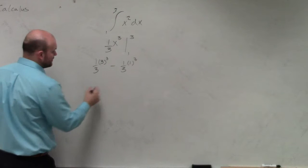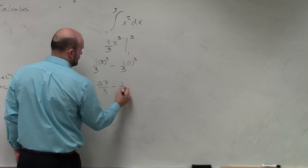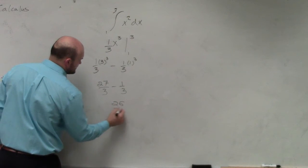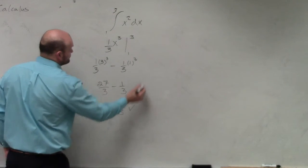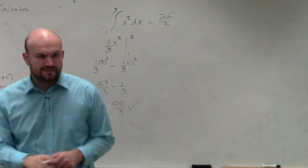Well, 3 cubed is 27, so 27 over 3 minus 1 third, which is 26 over 3. That should be your final answer.